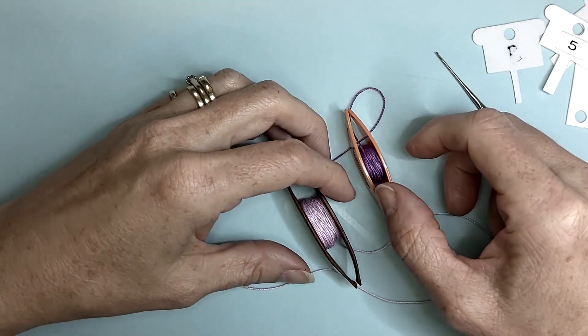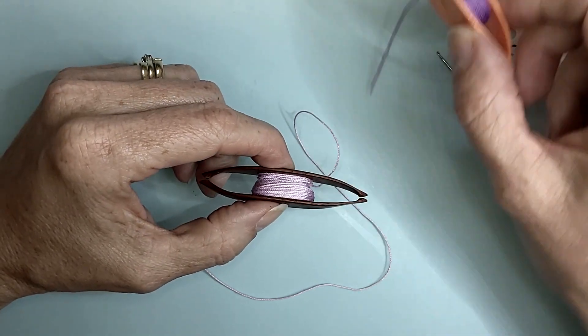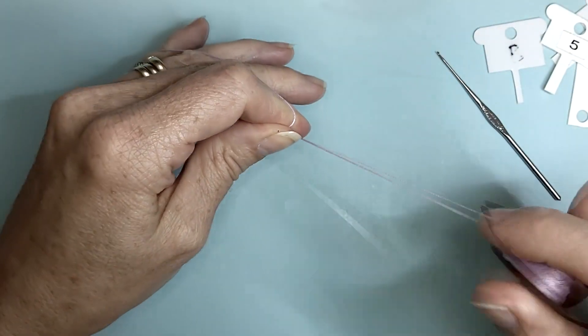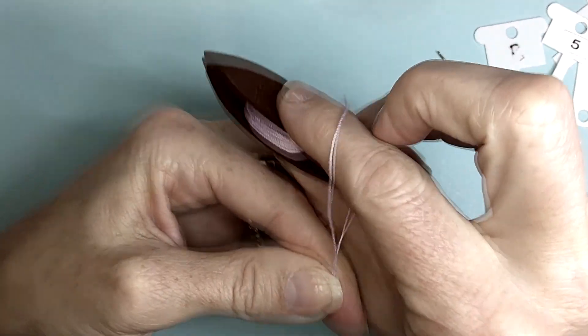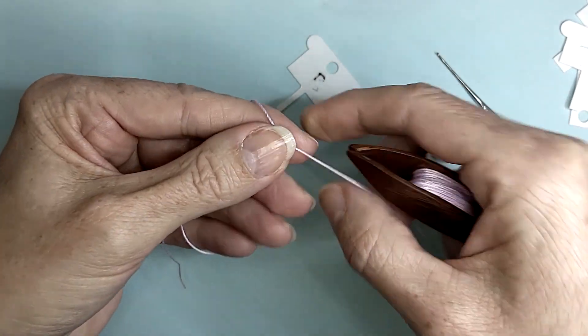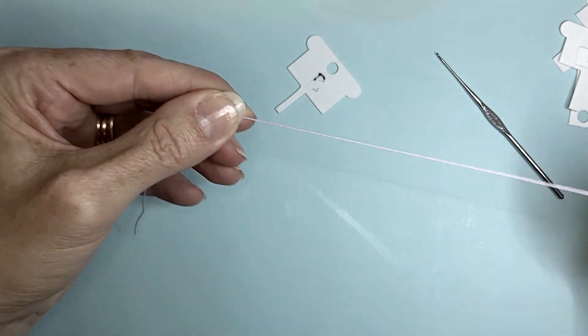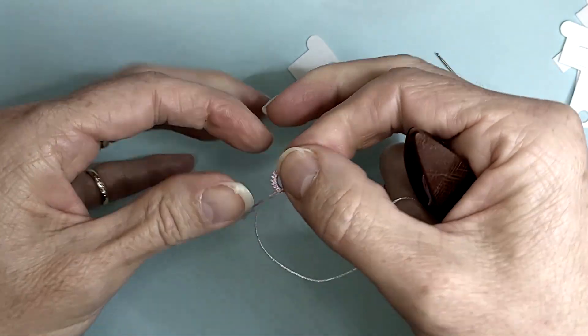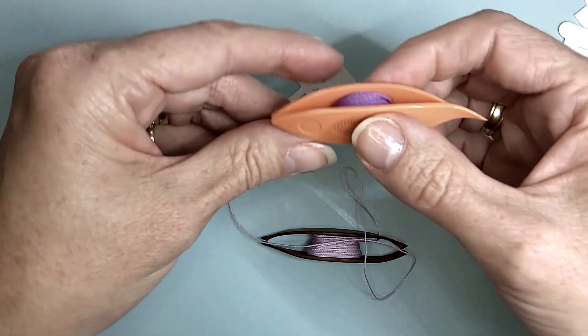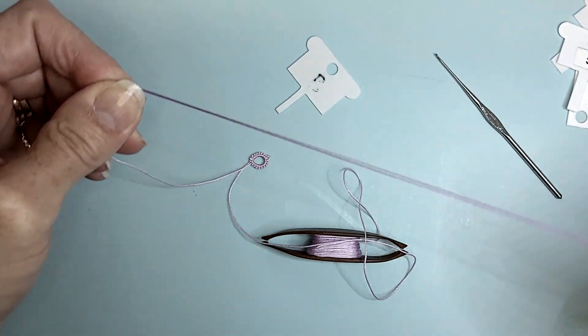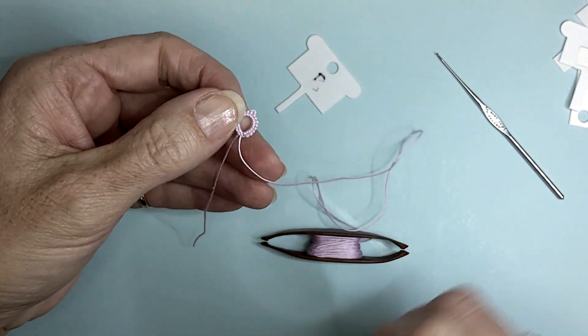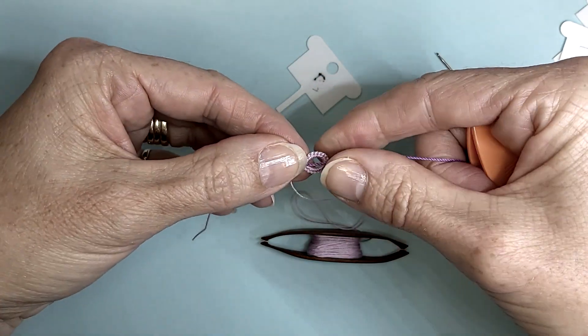To make Wilma, we are going to work with two shuttles. Shuttle 1 and shuttle 2. Take shuttle 1, leave yourself a tail for your antenna. Our first ring has a count of 9, adjoining picot and 9. Using shuttle 2, again we are leaving ourselves a tail. Hold the thread over the top of your first ring.